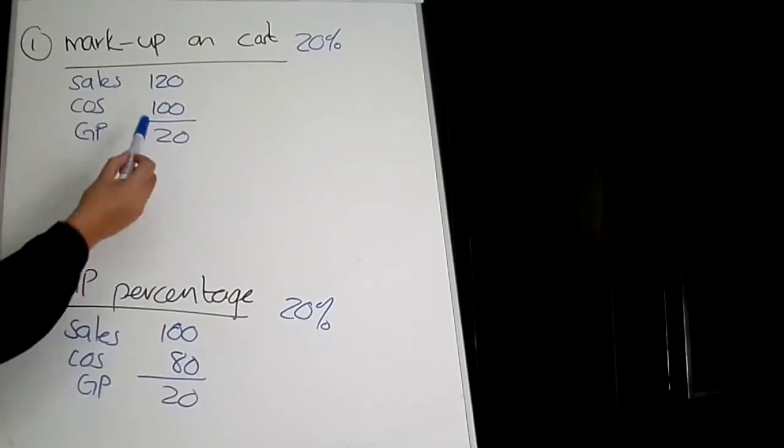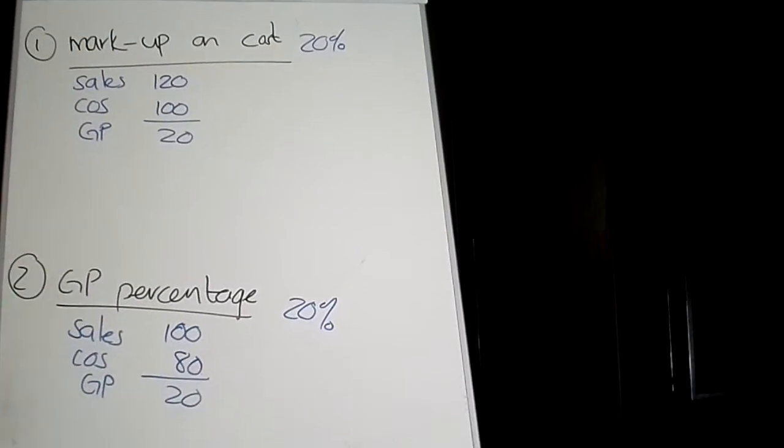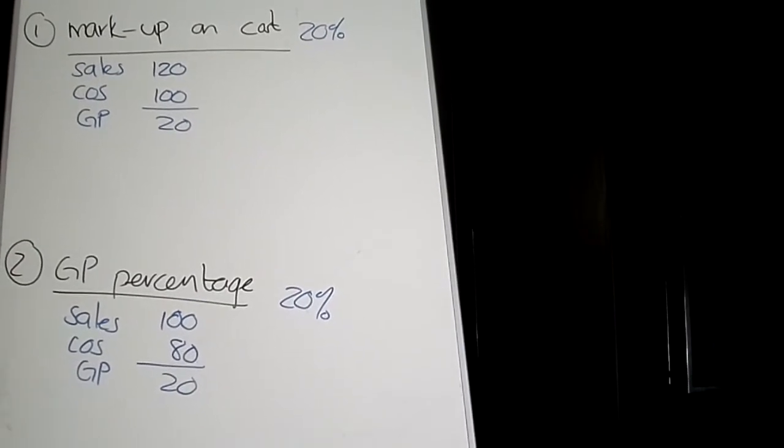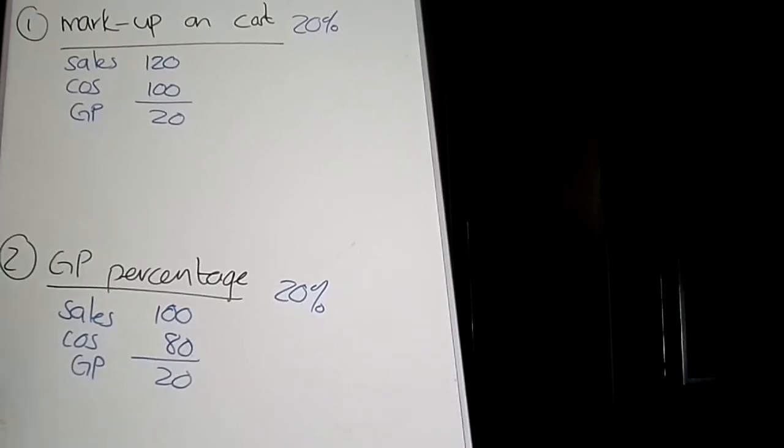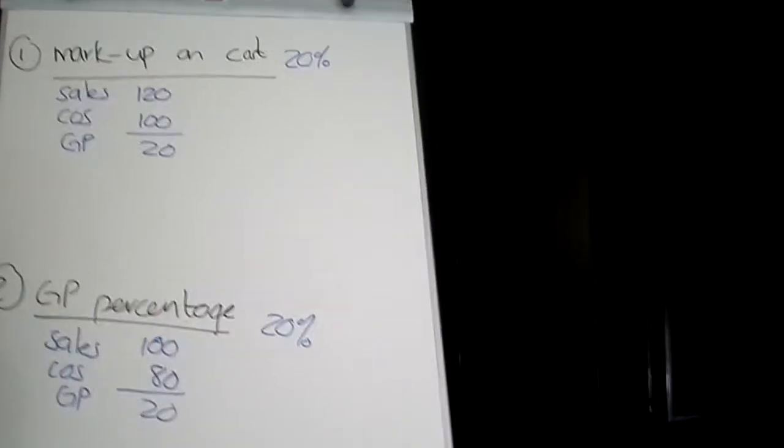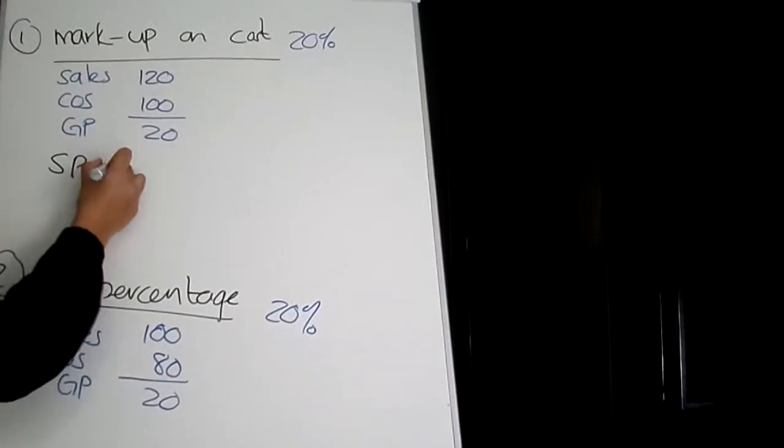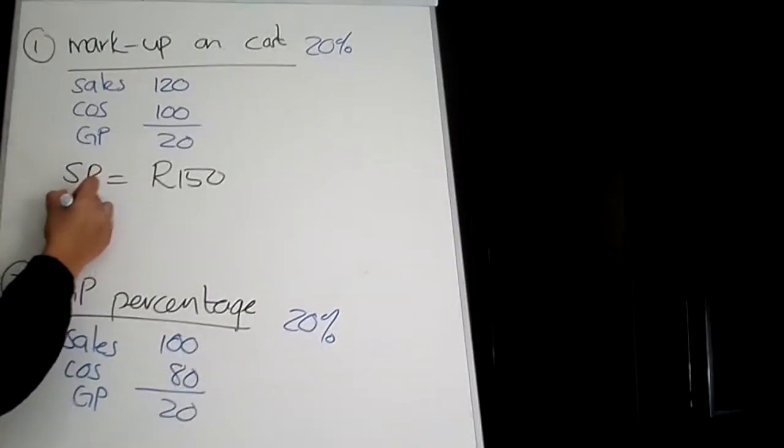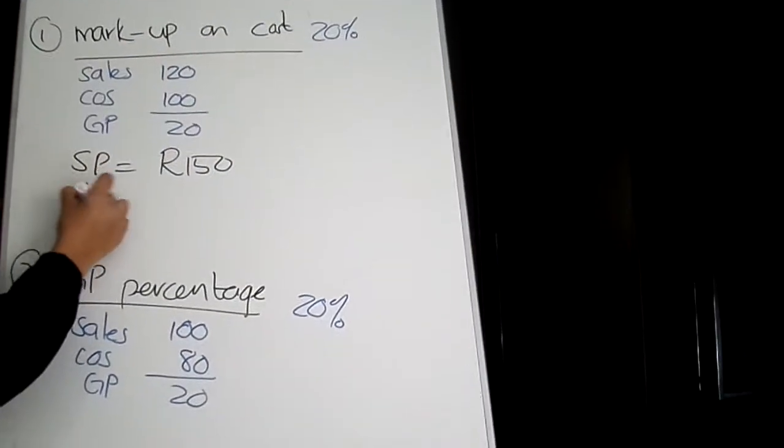Once you have figured out those percentages, you can now move on to calculate your sales or cost of sales depending on what the question is requiring you to do. So if after reviewing the question, the selling price equals R150, the markup on cost is 20%, and you now need to calculate cost price.